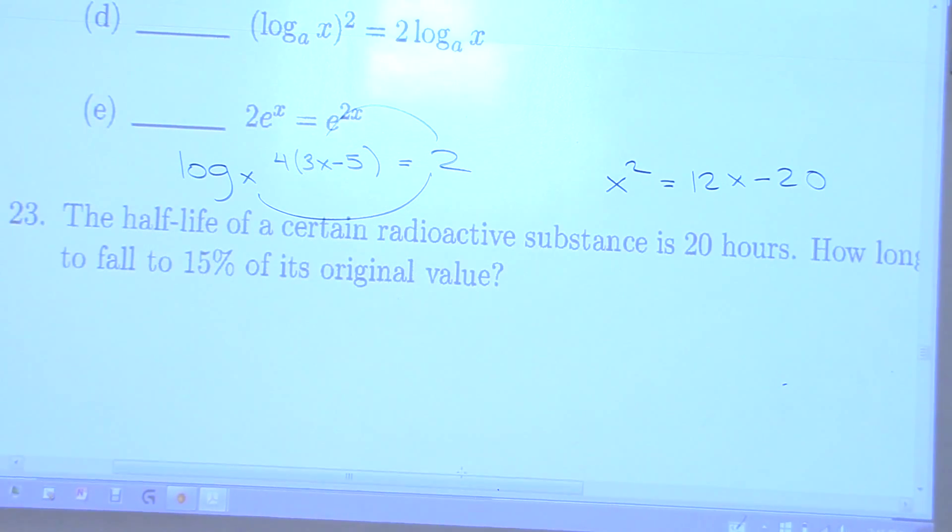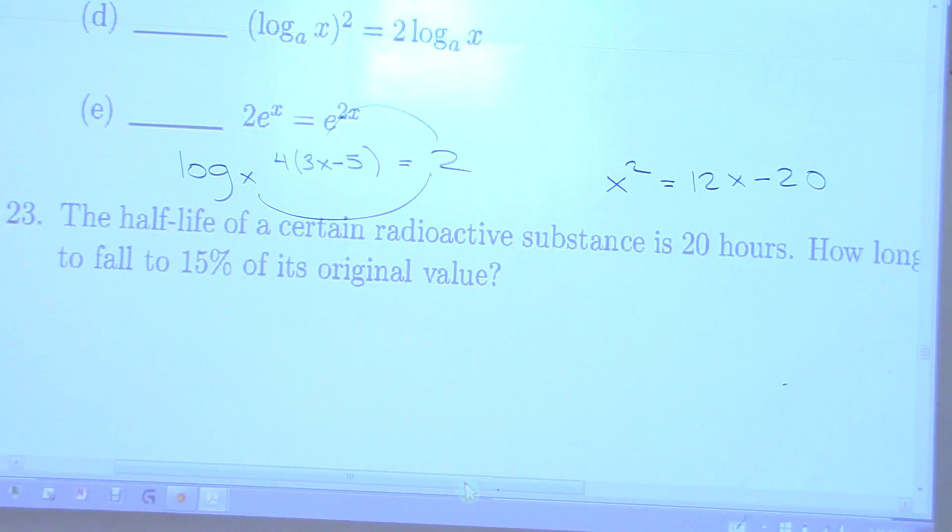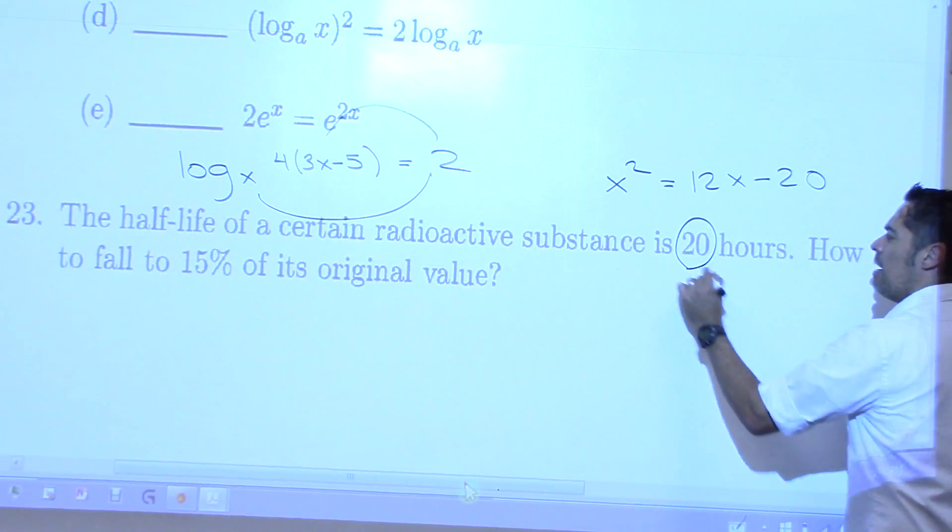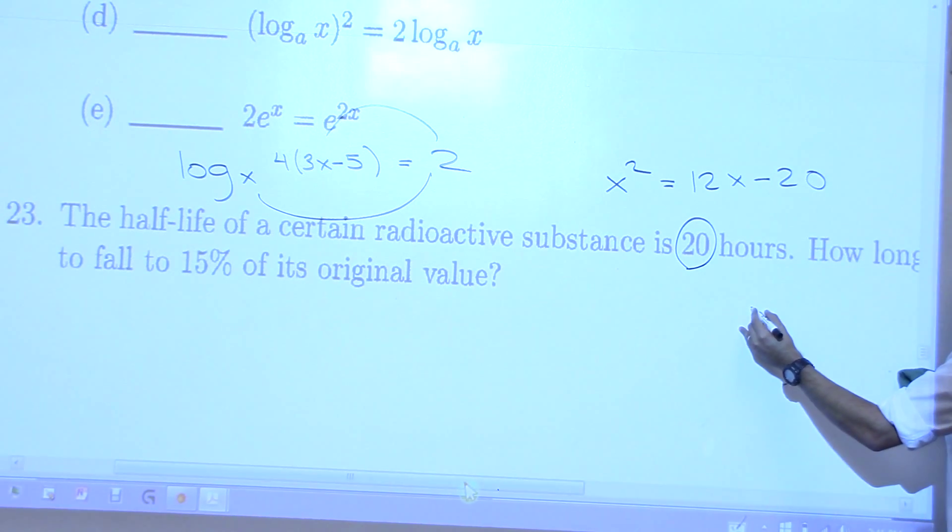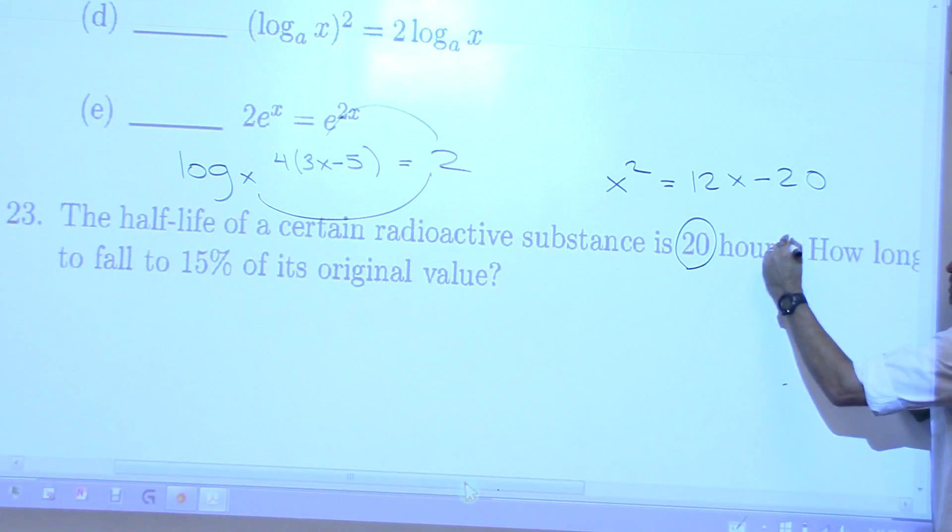Here we go. The half-life of a certain radioactive substance is 20 hours. How long does it take to fall to 15% of its original? So there's a couple things here. 20 hours, right? But it has to be measured in days? Years. So you need to find out how many years that is. I won't give that to you on the test. I'll make sure this is years.